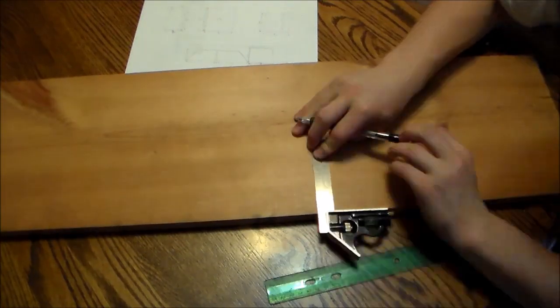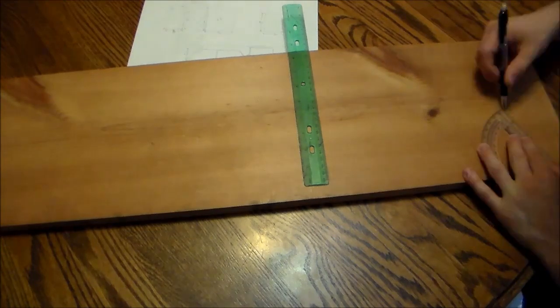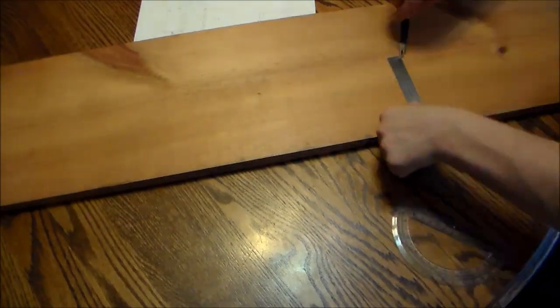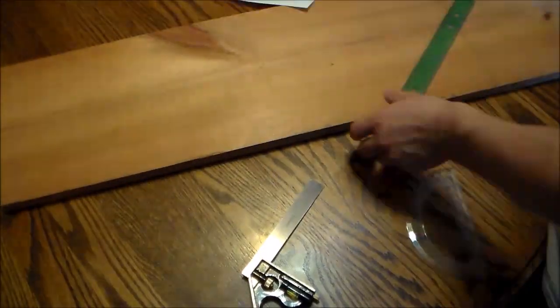Alright guys, we're going to start off with some wood that I found outside of a dumpster. It's about three-quarters inch thick by nine inches wide, and you guys can buy this at Lowe's or Home Depot, any big box store like that.